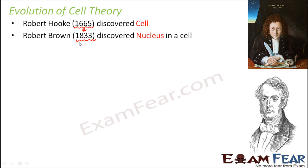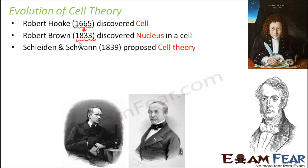With time, a cell theory was proposed. There was a pair of scientists, Schleiden and Schwann, who around 1839 proposed the cell theory. This cell theory was all about the existence of cells — what cells are and why they exist. The cell theory stated that cells are the structural and functional units of all life forms. They are the structural unit because they are the building blocks; many cells together make the entire structure of the living organism.